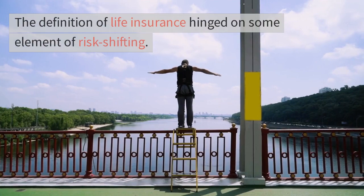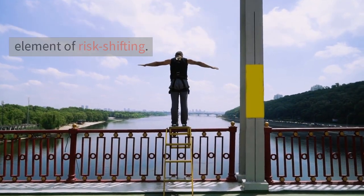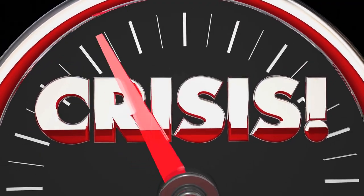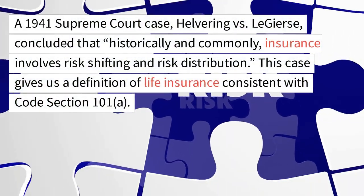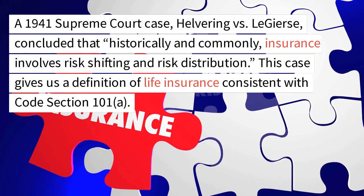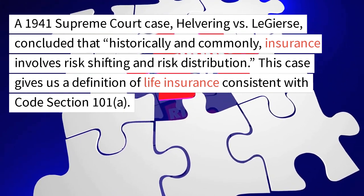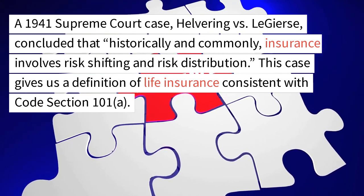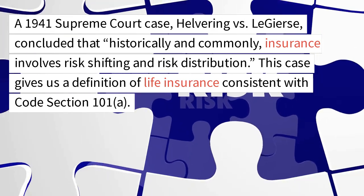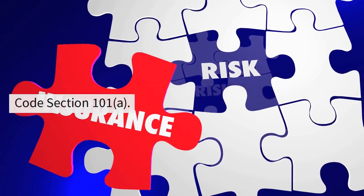The definition of life insurance hinged on some element of risk shifting. The magnitude of the risk was not at issue. A 1941 Supreme Court case, Helvering v. Legers, concluded that historically and commonly, insurance involves risk shifting and risk distribution. This case gives us a definition of life insurance consistent with code section 101A.